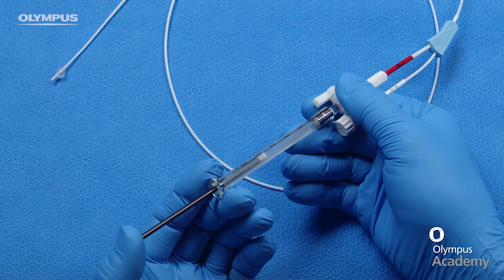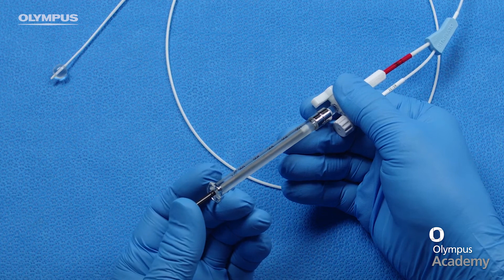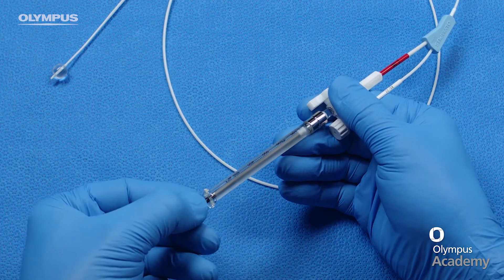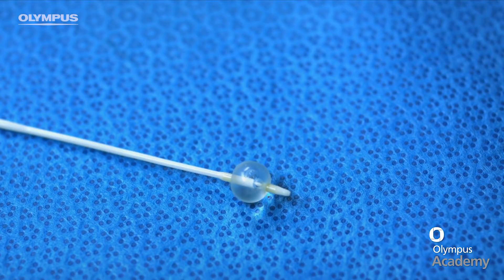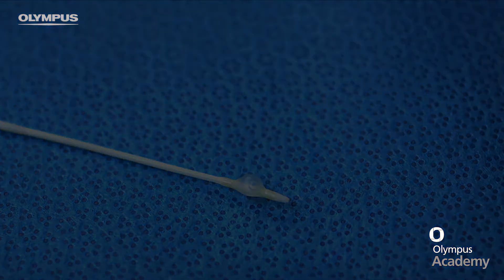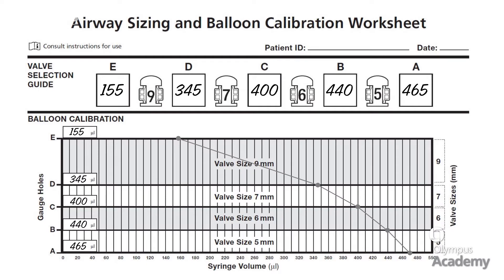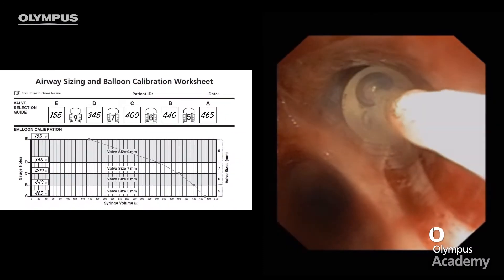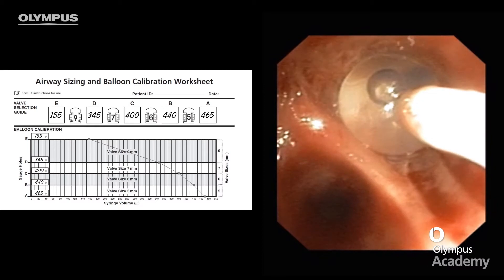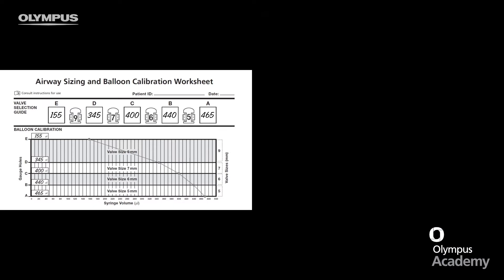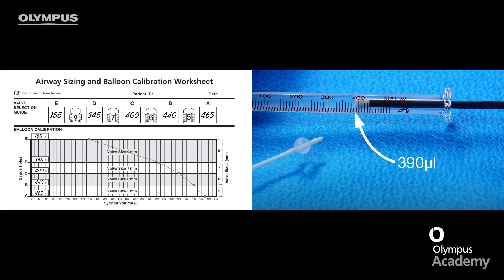Once the targeted lobe is determined, we need to size the airways prior to insertion of the valve. This is done with a specially calibrated balloon, which also serves as a sizing balloon. At the end of balloon calibration, a special worksheet is created and used during the valve case to determine airway size. When complete occlusion is achieved, the volume remaining in the syringe is compared against the calibration chart. In this instance, the volume left is 390 microlitres, which falls between 345 and 400 microlitres — the range for a size 7 valve.